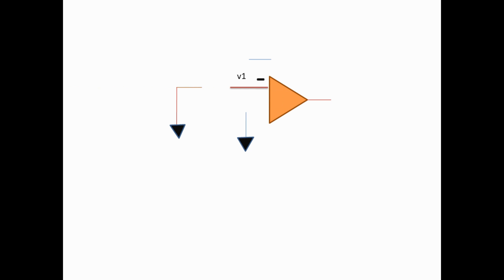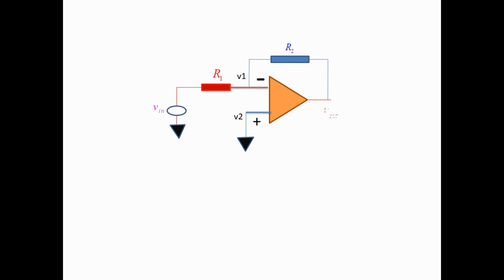These are two ground points at zero potential along with few connectors. This is an op-amp. This is the inverting terminal of the op-amp — the negative sign indicates a phase reversal of input V1 at the output. This is the non-inverting terminal; the name suggests no phase reversal of input voltage V2 at the output. This is input resistance R1 connected to the op-amp, and this is the output or feedback resistance R2. This is the input voltage applied to the inverting terminal, so the circuit is called an inverting op-amp. This is the output of the op-amp.